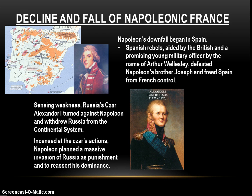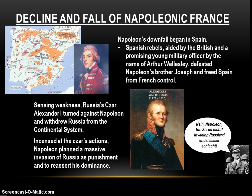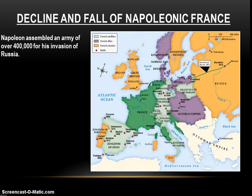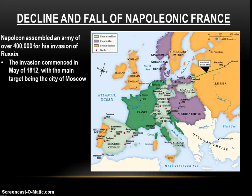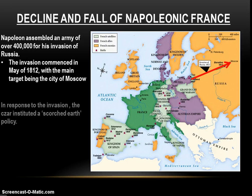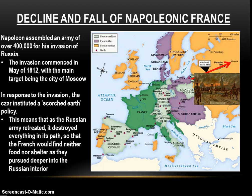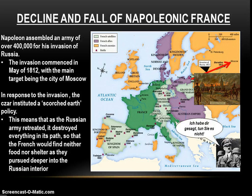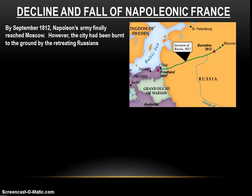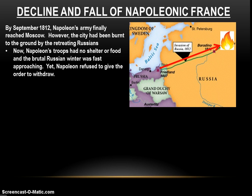Angered at the czar's actions, Napoleon planned a massive invasion of Russia for two reasons: to punish Russia and to show Europe that he was still powerful. Napoleon assembled an army of over 400,000 for his invasion. The invasion commenced in May of 1812, with the main target being the city of Moscow. In response, the czar instituted a scorched earth strategy — as the Russian army retreated, it destroyed everything in its path so the French would find neither food nor shelter as they pursued deeper and deeper into the Russian interior.